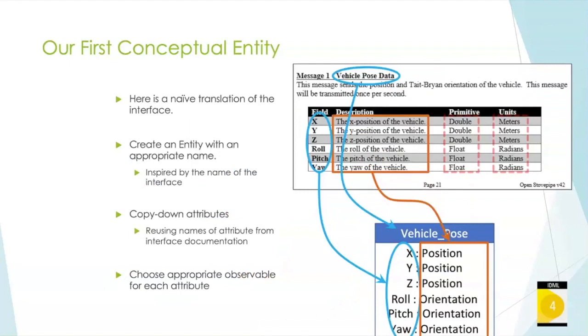Let's take and build out a naive translation of the interface. As I discussed in the previous slide, we'll just take vehicle pose data and make a new entity here called vehicle pose. Then we'll move all of our attributes down into the interface. We have to do something here with this description. Notice I put these things over here on the right in dashed boxes. This is still important information, but we're going to use it in the logical and platform levels. Right now, I'm just worried about building out some conceptual content.